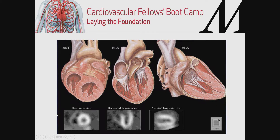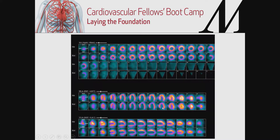The standard views for a SPECT stress test are: the short axis slice, showing the anterior, inferior, septal, and lateral walls of the left ventricle; the horizontal long axis view, showing the lateral and septal walls; and the vertical long axis view, showing the anterior and inferior walls. The end product shows stress images on top and rest images on the bottom. You are looking for any flow disparity or heterogeneity — normally stress flow should equal rest flow. Decreased tracer uptake at stress compared to rest indicates coronary artery disease in that territory.